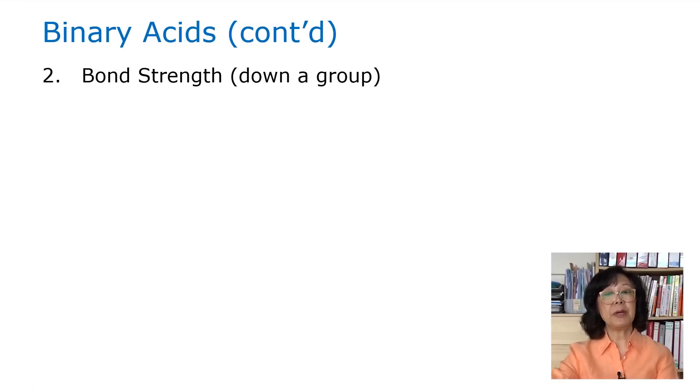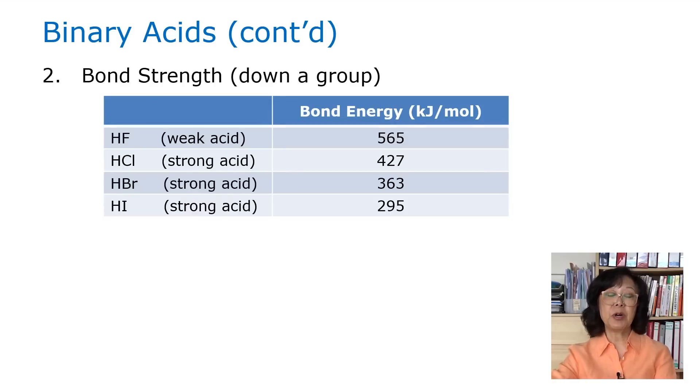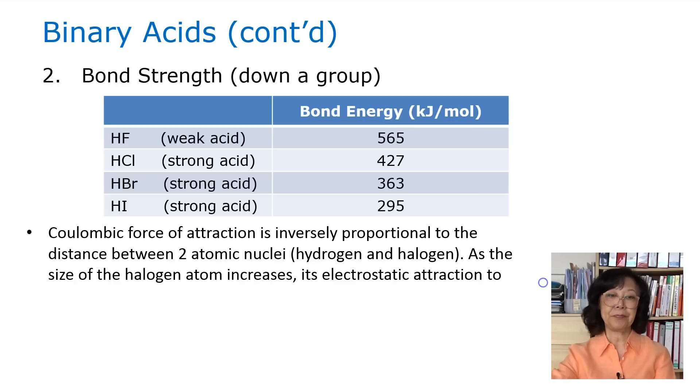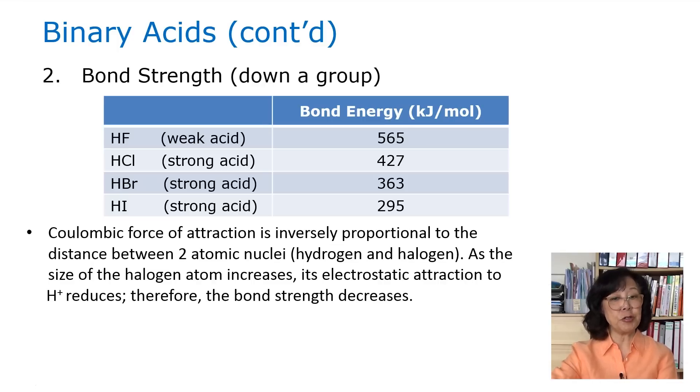When we compare down a family group, we are looking at bond strength. Look at the bond energy of HF, HCl, HBr, and HI. It is the strongest in HF and then it goes down in a decreasing order. The Coulombic force of attraction is inversely proportional to the distance between two atomic nuclei, that is the hydrogen and the halogen. When the size of the halogen atom increases, the electrostatic attraction to the hydrogen positive ion reduces, therefore the bond strength will decrease.